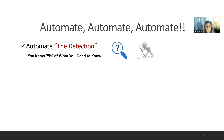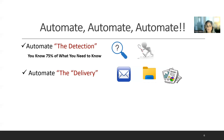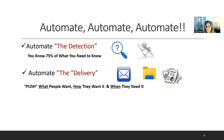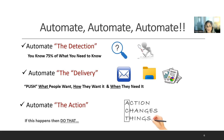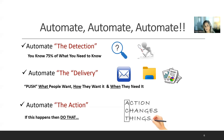It automates the detection — you know 75% of what you need to know, so why not automate the other 25%? It automates the delivery in email format, file formats, or reporting. You push what people want, how they want it, and when they need it. Then it automates the action: if this happens, then do that. All in all, Sage Alerts and Workflow saves you time, makes you more responsive, and increases knowledge.